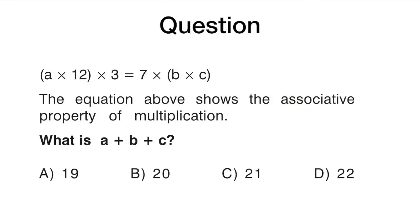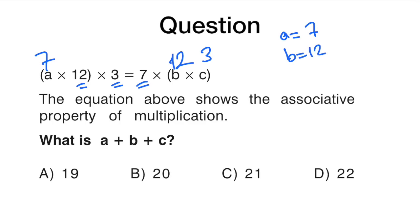For the associative property of multiplication, the question says find the value of a, b, and c. Seven is here so a should be seven; twelve is here so b should be twelve; and three is here so c should be three. A is seven, b is twelve, c is three, and their sum is three plus seven plus twelve, which makes twenty-two.